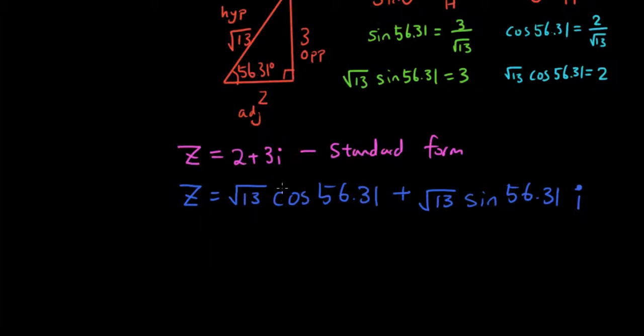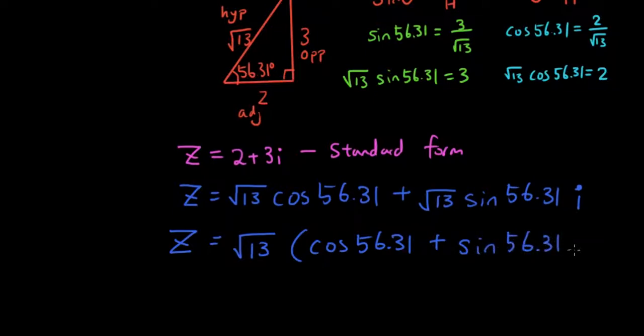Now you can see that both terms have a square root of 13. So I'm going to take the square root of 13 out by factorizing. So I get square root of 13 bracket cos 56.31 plus. I've taken out the square root of 13 to the front, so I don't write it here. So it's sin 56.31i.